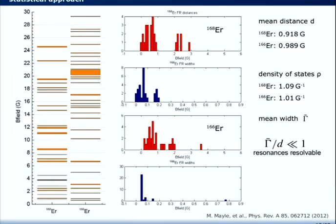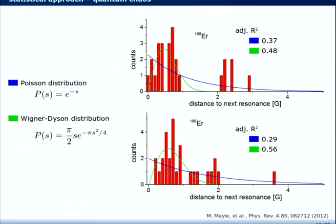And what we did is take the spectrum and assign the position and the width of the resonances. Then calculating a histogram of the width in blue and the distances in red for the two different isotopes, 168 and 166. And now calculating the mean distance, one can conclude the density of states, which is one over the mean distance actually. This is roughly the same for both isotopes. So that's one per gauss. And then one can calculate this ratio. So gamma bar is the mean width divided by the mean distance. And if this is much smaller than one, then the resonances are resolvable. And this ratio is in our case around 0.1. So although we have seen that some resonances overlap, this ratio is in our case around 0.1.